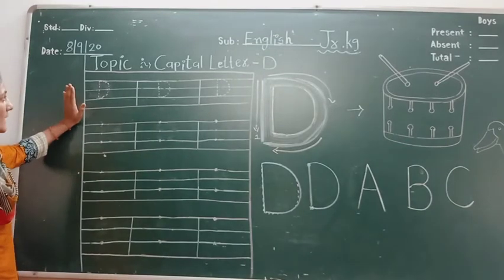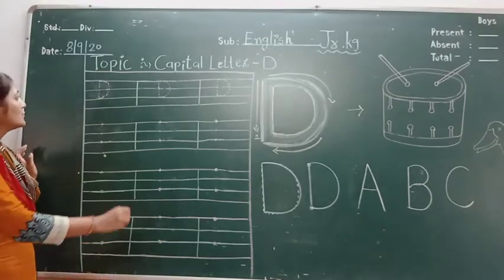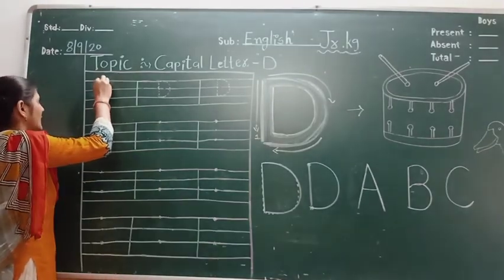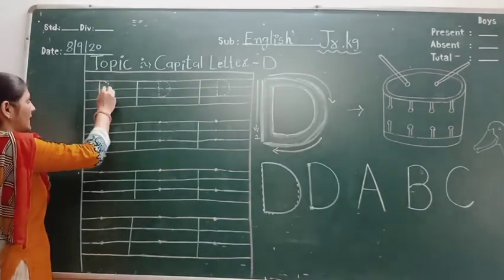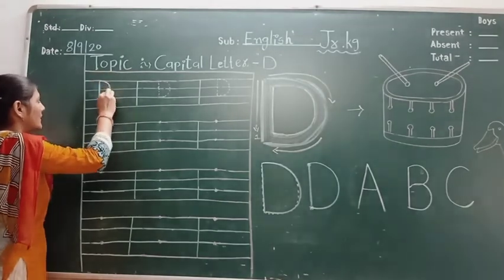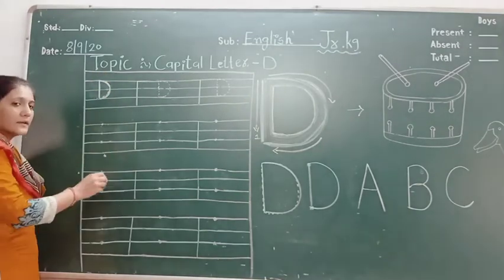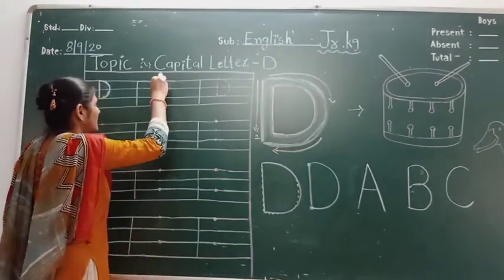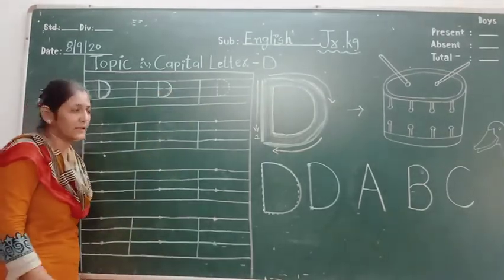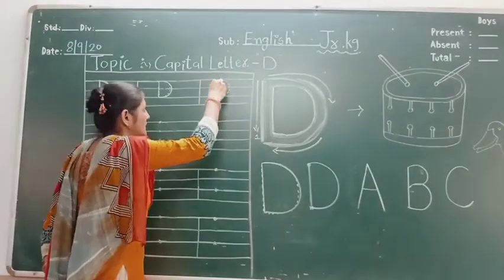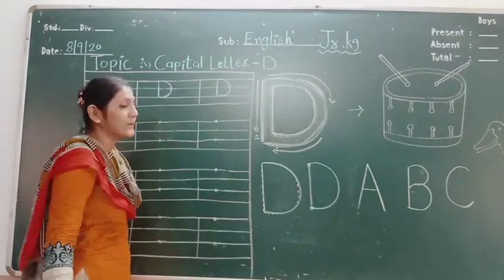So how do you write capital letter D in a full-line notebook? Join the dots and make a standing line. First join the dots, make a standing line, and join the dots and make a curve line — and then capital letter D. Same here: first standing line and curve line.